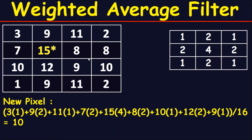Then multiply the corresponding values together: three times one, plus nine times two, plus eleven times one, plus seven times two, plus fifteen times four, plus eight times two, plus ten times one, plus twelve times two, plus nine times one.